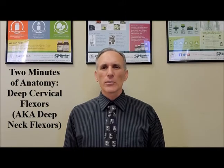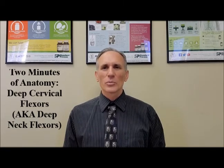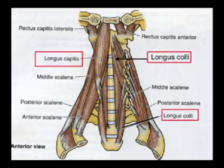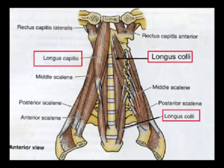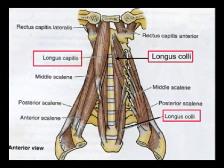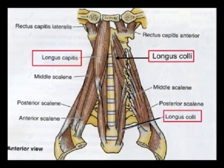The deep cervical flexor muscles are also known as the deep neck flexor muscles. This is a group of four muscles, all of them located bilaterally in the cervical spine — the medical name for the neck. These muscles consist of the longus capitis, the longus cervicus (also known as the longus coli), the rectus capitis anterior, and the rectus capitis lateralis.